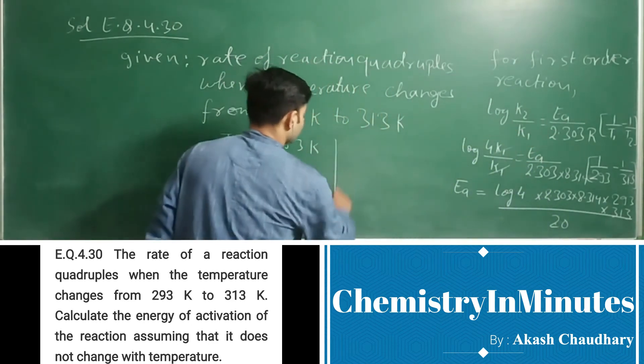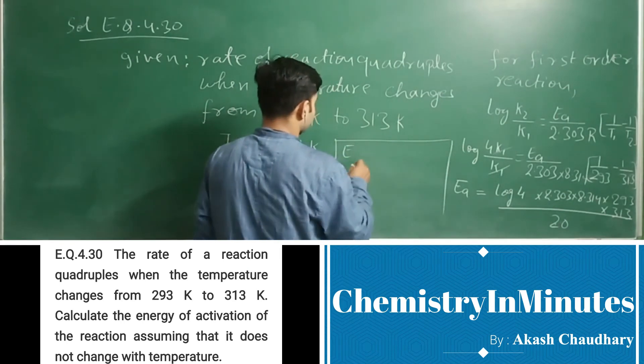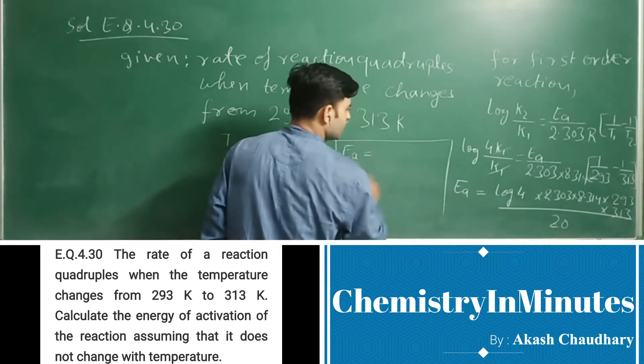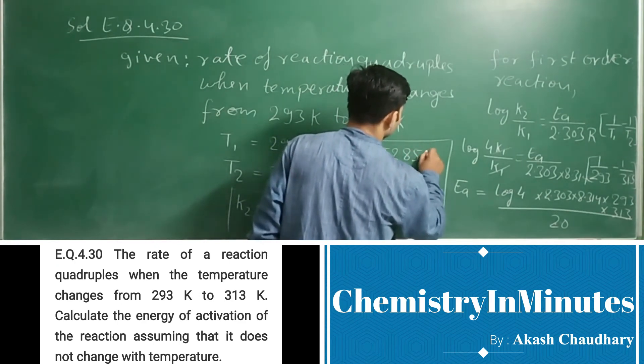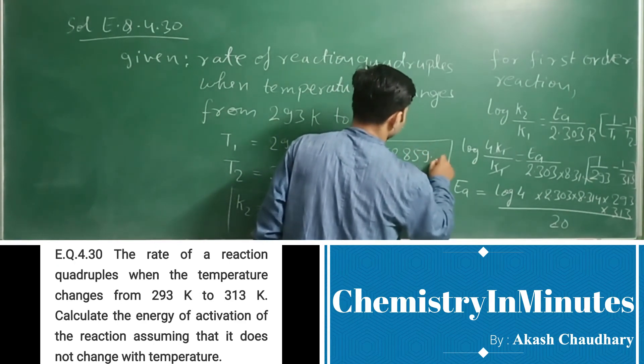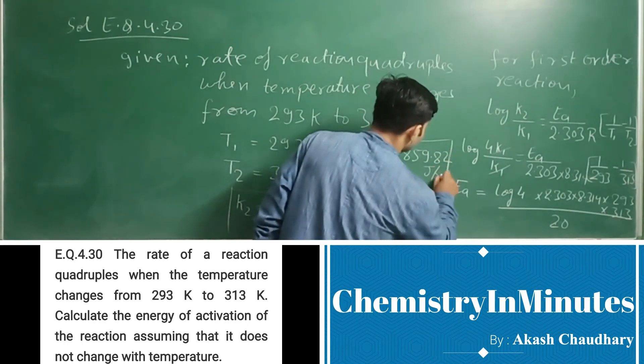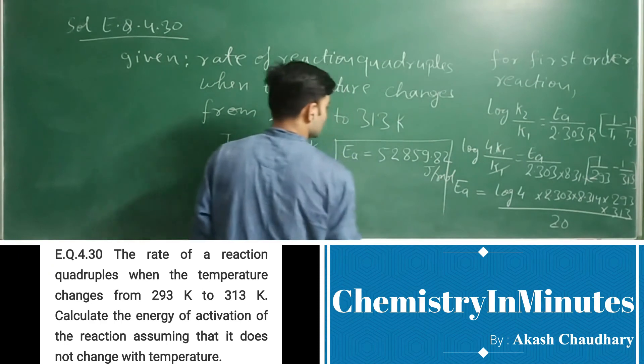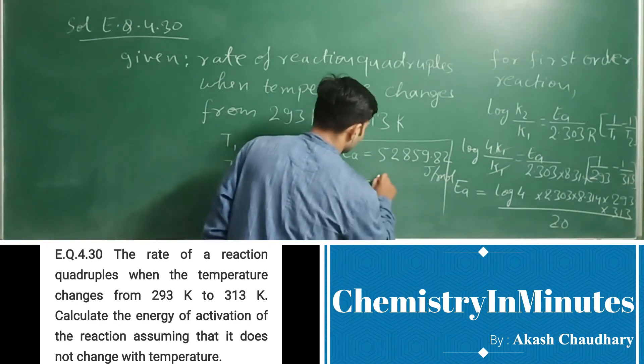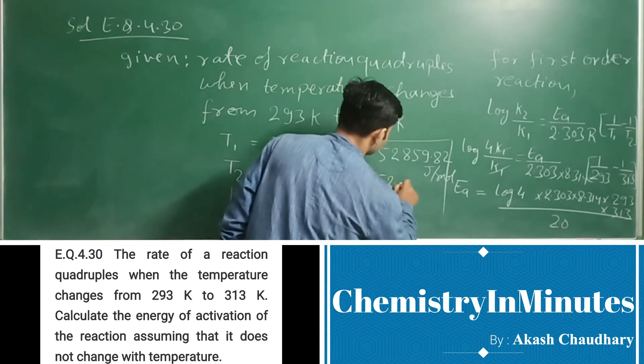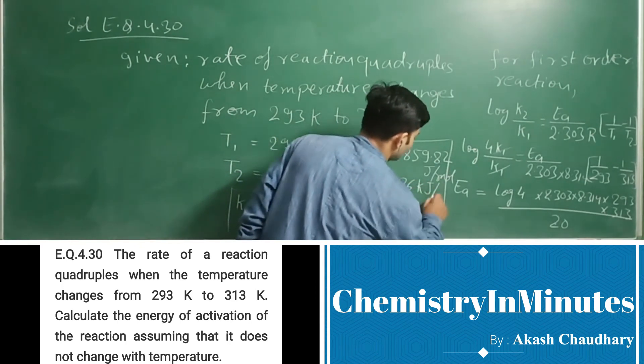Now the value of Ea, this will come as 52859.82 J per mole. This can be written as Ea equal to 52.86 kJ per mole.